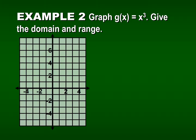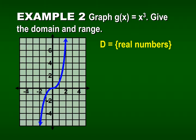Let's look at another example. Let's graph g of x equals x cubed and find the domain and range. The graph has the bottom tail coming in from the bottom left and going up to the top right. Domain and range: there are no limitations on x or y values — they go in both directions, so both are all real numbers.